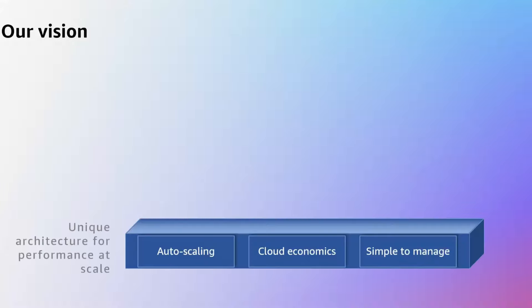Before we get into the specifics of Generative BI and Amazon Q in QuickSight, I wanted to share our vision. Our vision is to make QuickSight the preferred choice for all our customers to deliver insights to every user in organizations. We have a three-layered approach: the bottom layer includes auto-scaling capabilities and cloud economics that are simple to manage.